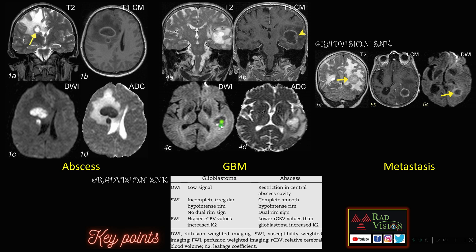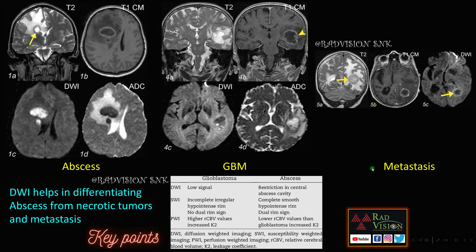In GBM and metastasis there will not be any restricted diffusion on DWI in the core, and the ADC will be high. There is no restricted diffusion on DWI in GBM, and similarly no restricted diffusion in metastasis. Diffusion weighted imaging helps in differentiating abscess from necrotic tumor and metastasis. Pause the slide to see the other features which help in differentiating glioblastoma from abscess — including the dual rim sign on DWI which is seen in abscess but absent in glioblastoma.